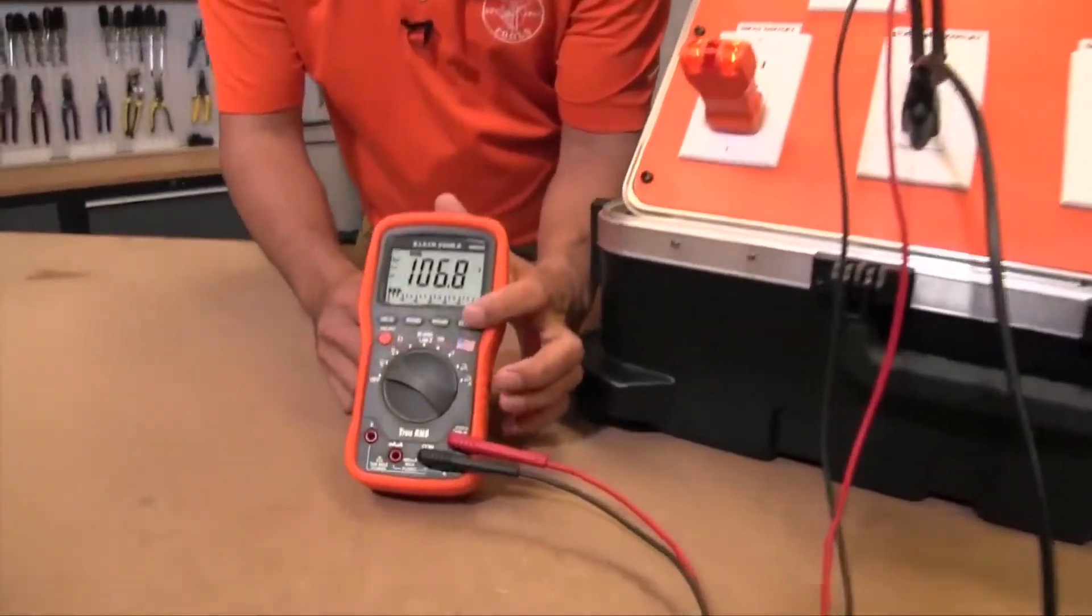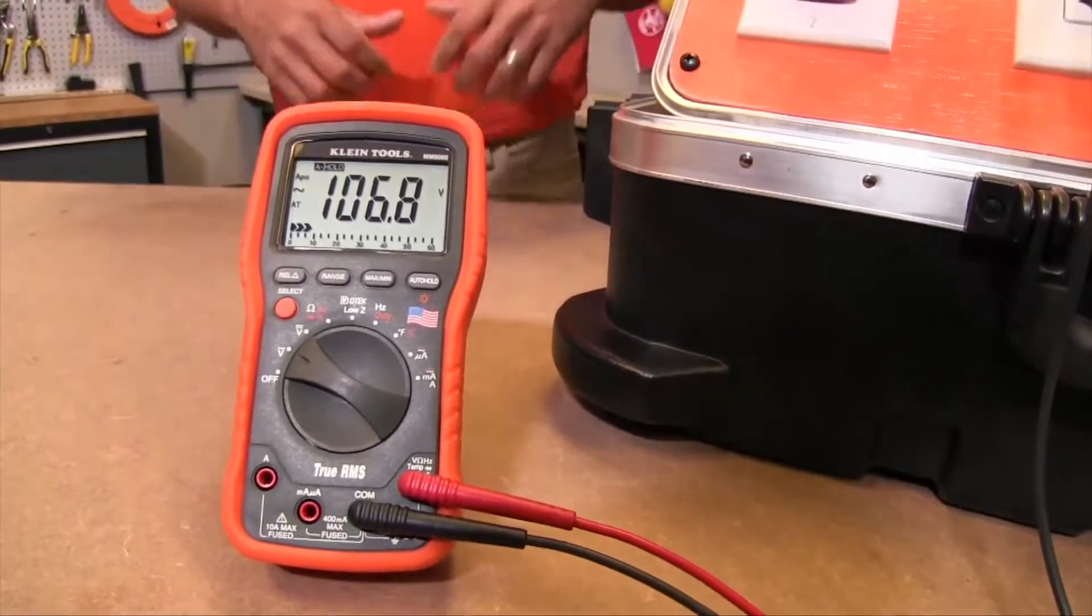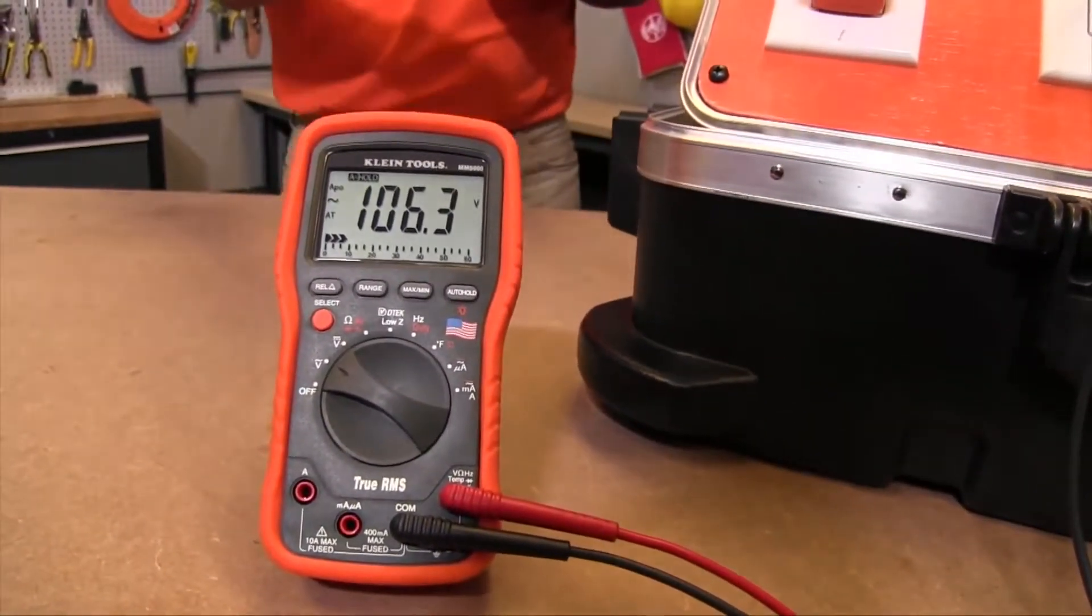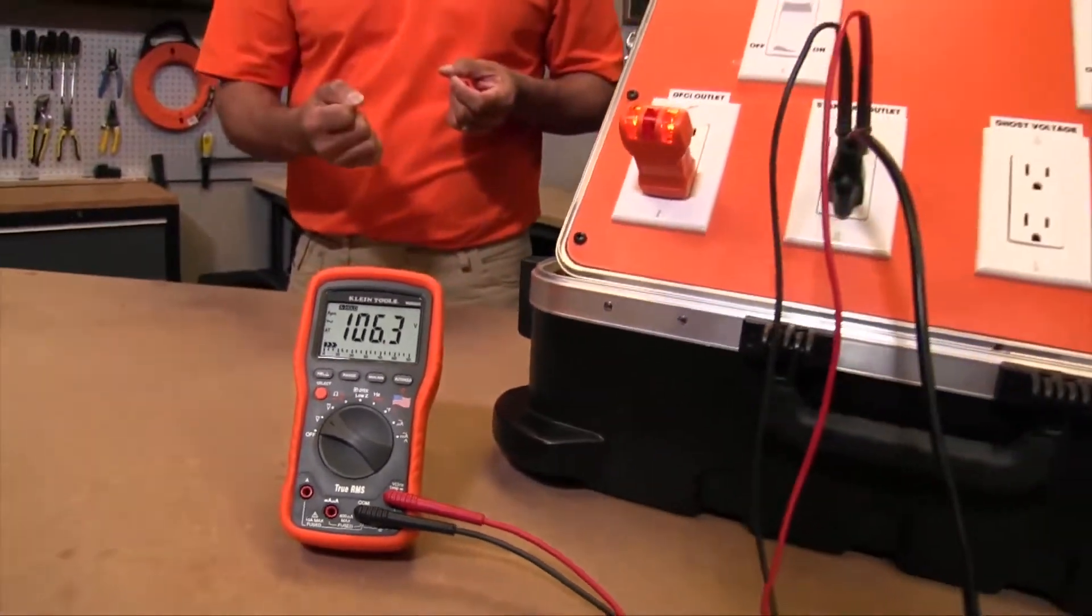So I'm going to press our auto hold button again. You'll see that now auto hold turns on. Now the difference is the meter is actually actively searching for a new signal and it's waiting to capture it. It's waiting to capture the most stable signal that it can.